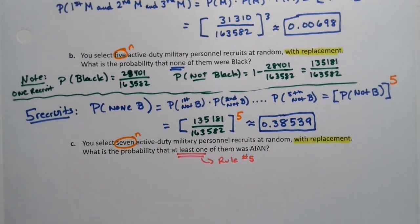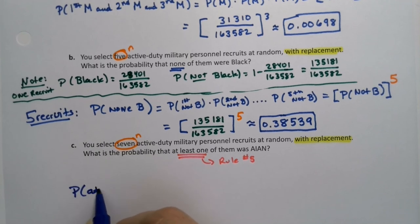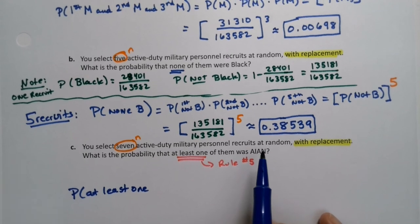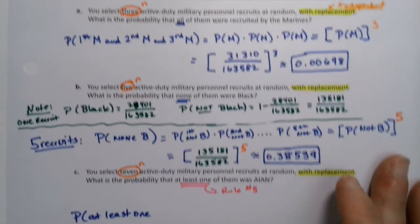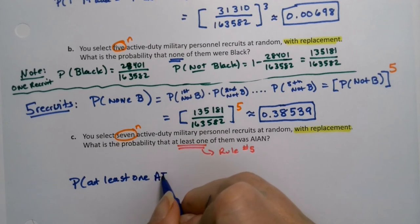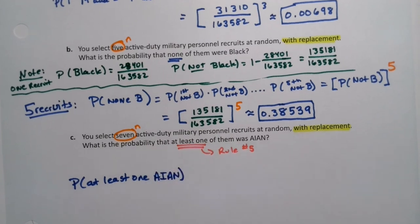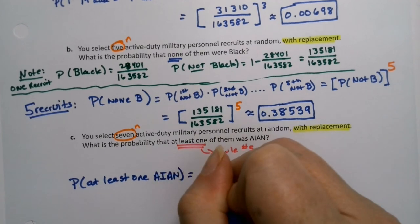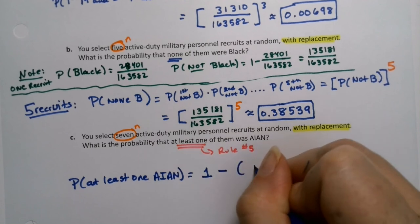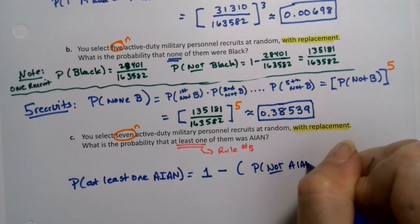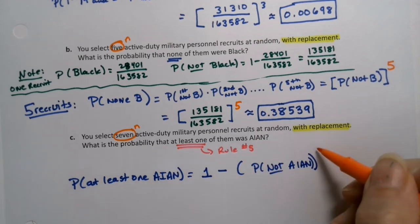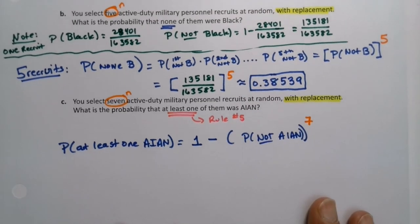The probability of at least one, let's see, AIAN stands for American Indian, Alaskan Native. So at least one AIAN, that would be one minus the probability of not being AIAN to the seventh power, because N is seven on this particular one.